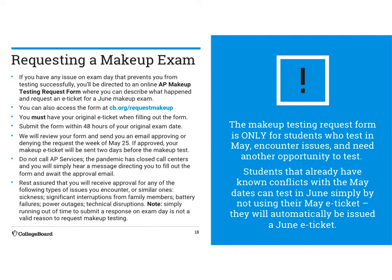Requesting a makeup exam: if you have an issue on exam day — for example, if your internet dies — you can fill out an AP makeup exam request. You must have your original e-ticket while filling out the form, and you have to submit it within 48 hours. If you qualify, they'll let you know by the week of May 25th. Do not call AP — they will get with you. Simply running out of time to submit your response is not a valid reason. This is for emergencies like suddenly getting ill mid-test, or your Wi-Fi or device dying.